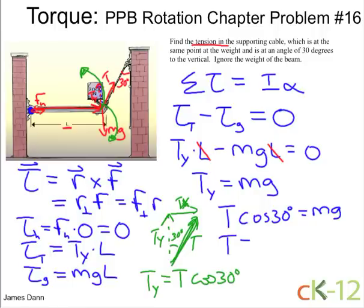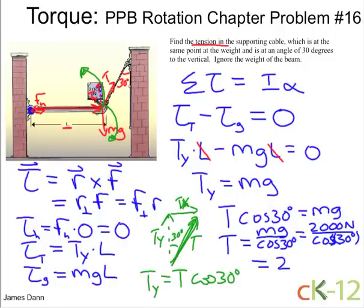And now I can just plug in the numbers. We'll first divide both sides by cosine 30, so I get mg over cosine 30 degrees. And the mass times gravity is 2,000 newtons, it's given to us in the picture. And that divided by cosine 30 degrees, well 2,000 divided by cosine 30 degrees is equal to 2,300 newtons.